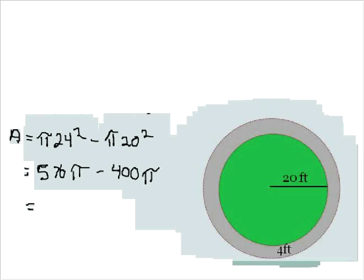And because they're like terms, I don't have to multiply out my pi quite yet. 176 pi is my exact area. And if I multiply that out, I can figure out that the area is equal to 552 feet squared.